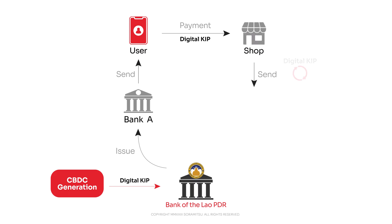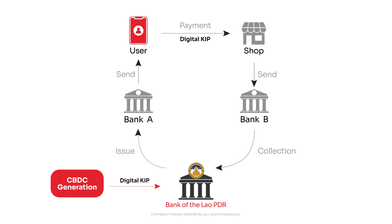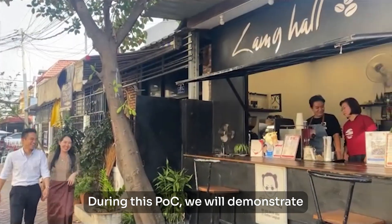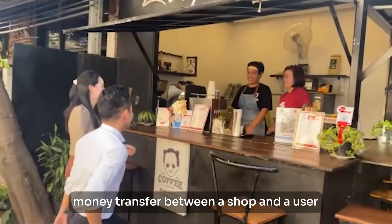Shops can exchange digital kip they receive to fiat kip at Bank B. Finally, Bank B can exchange digital kip to fiat kip with the Bank of the Lao PDR as a collection. During this POC, we will demonstrate money transfer between a shop and a user.